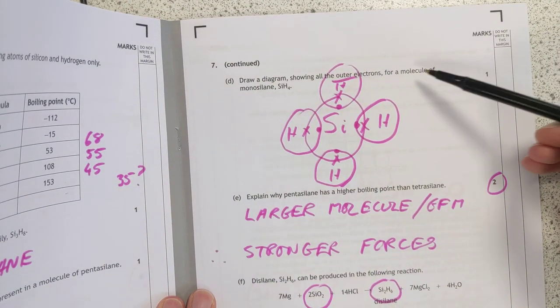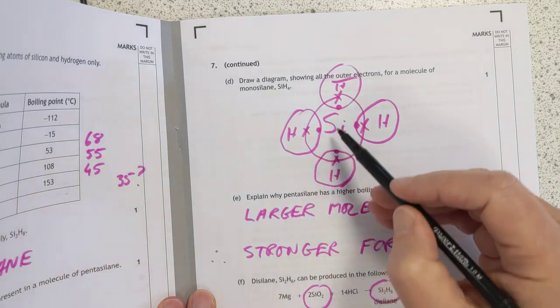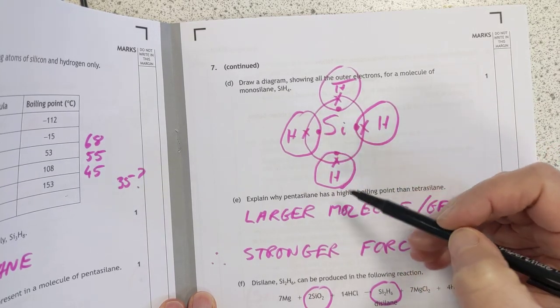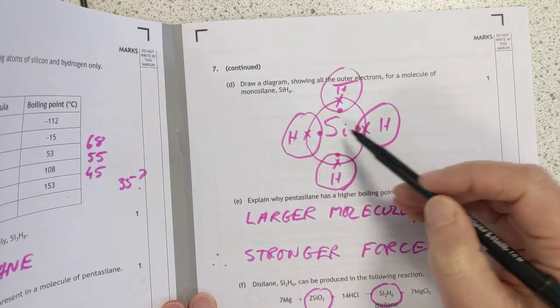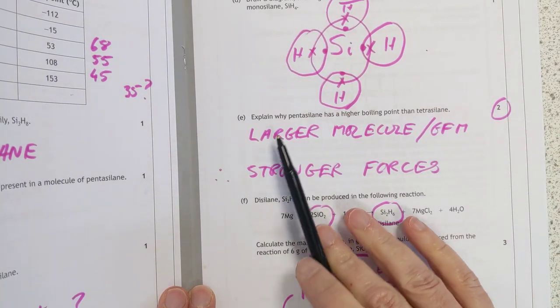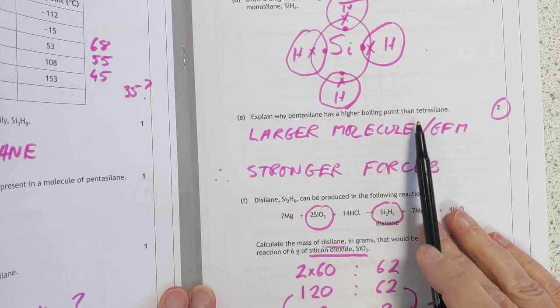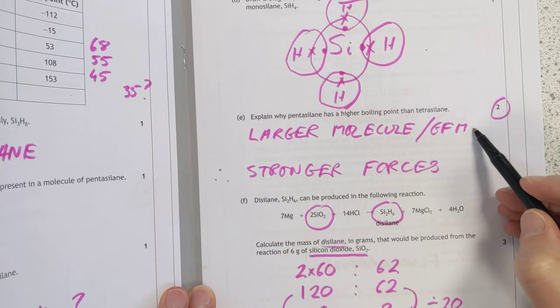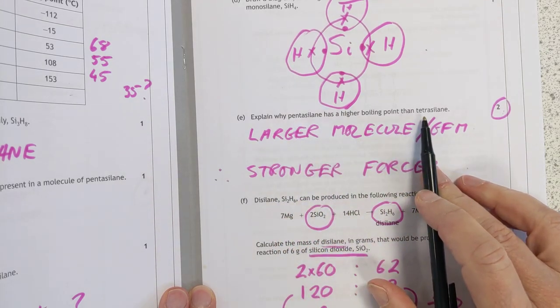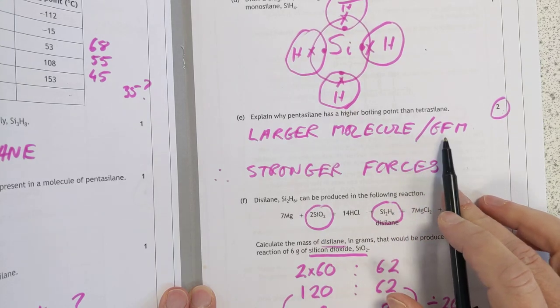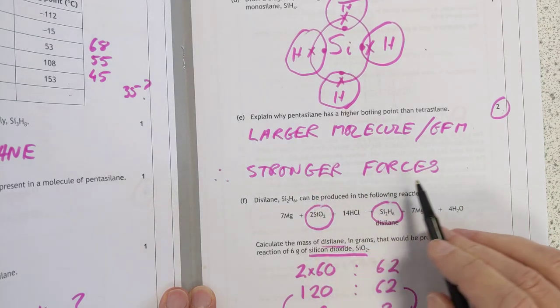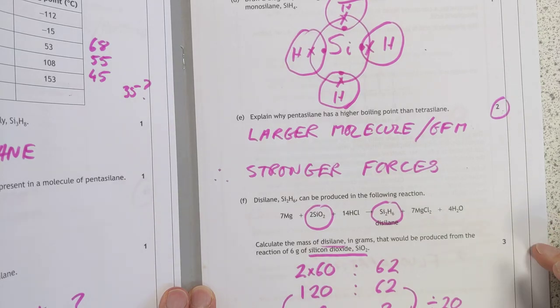Diagram for the outer electrons for a molecule of monosilane. Silane here is in group 4. So, it will have had 4 outer electrons, which are the crosses here. The dots are the electrons from each of the hydrogens. You don't have to show crosses and dots. You don't have to show circles even. You can show this much simpler version of that. You should still get the mark. Explain why pentasilane has a higher boiling point than tetrasilane. Two marks here. I'm guessing there's one mark for each of these points. The larger molecules of pentasilane compared to tetrasilane or larger GFMs. I think they should accept either. I'm not sure, though. The larger molecules have stronger intermolecular forces or stronger forces of attraction between the molecules. That's why the boiling point's higher.